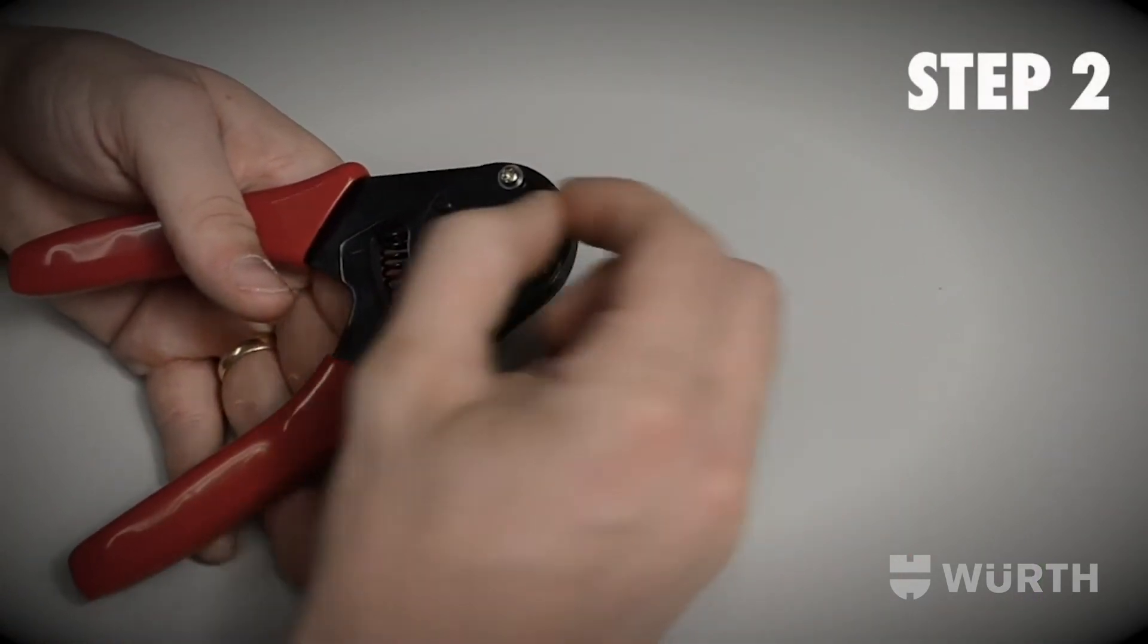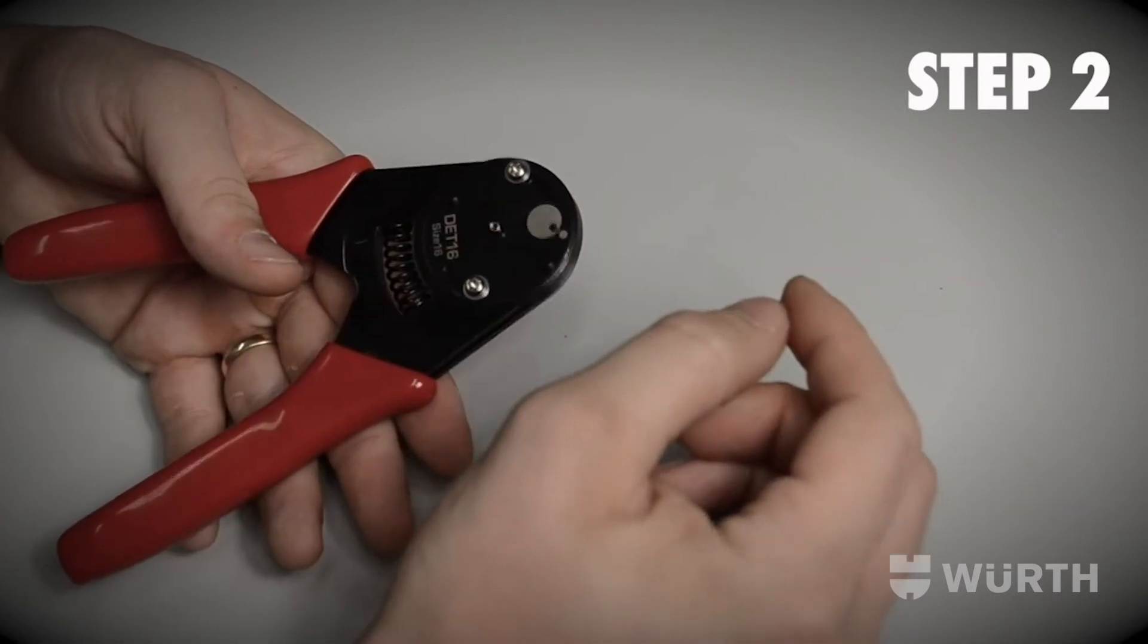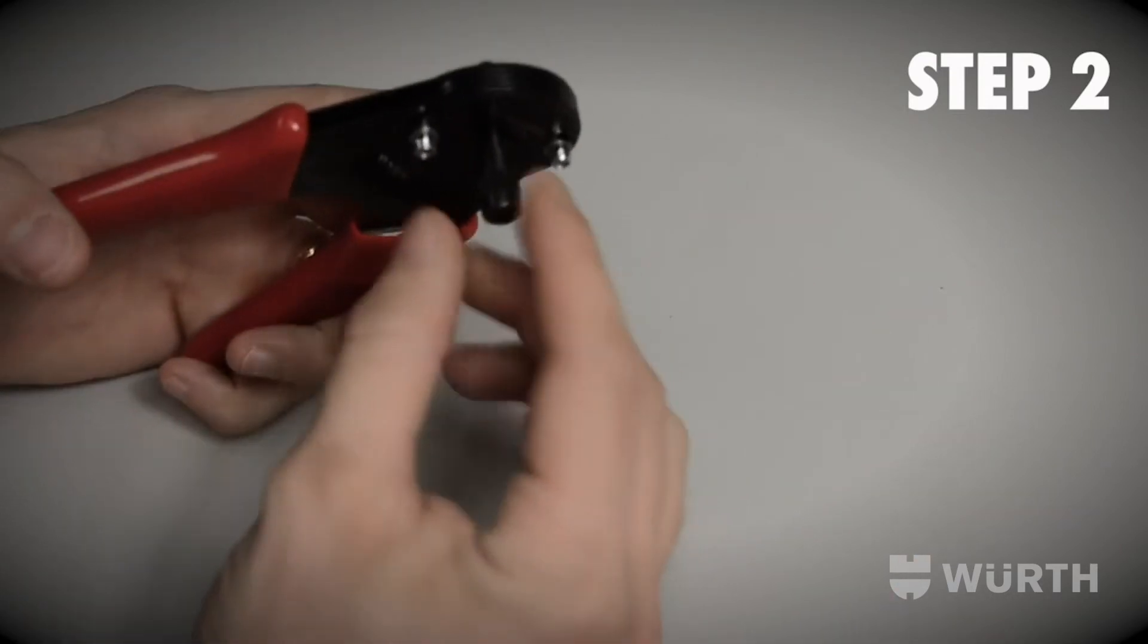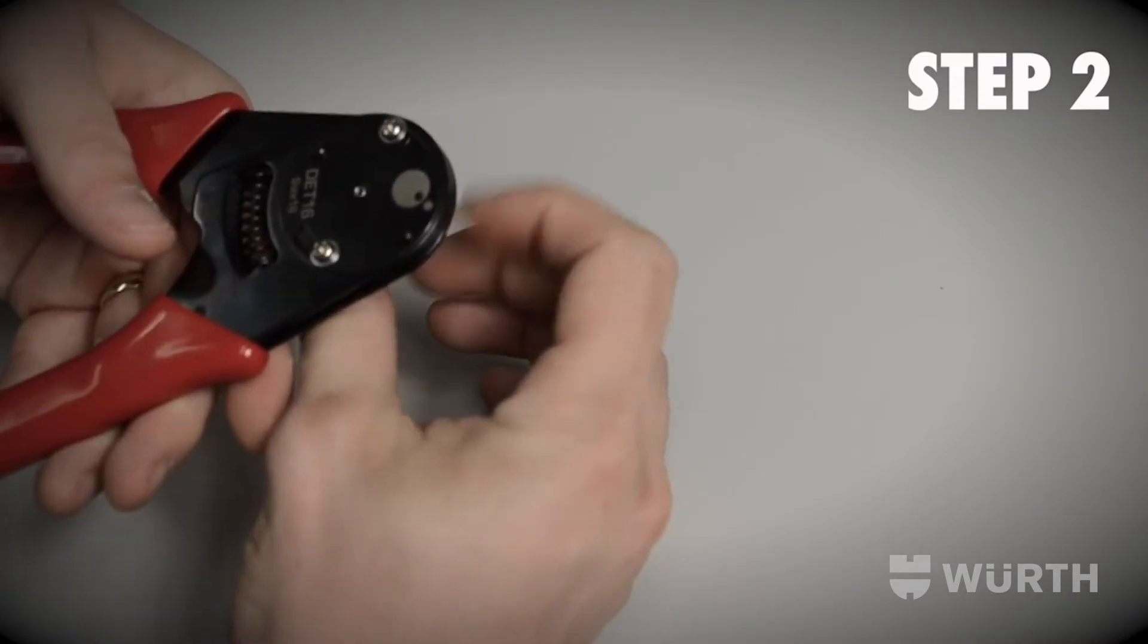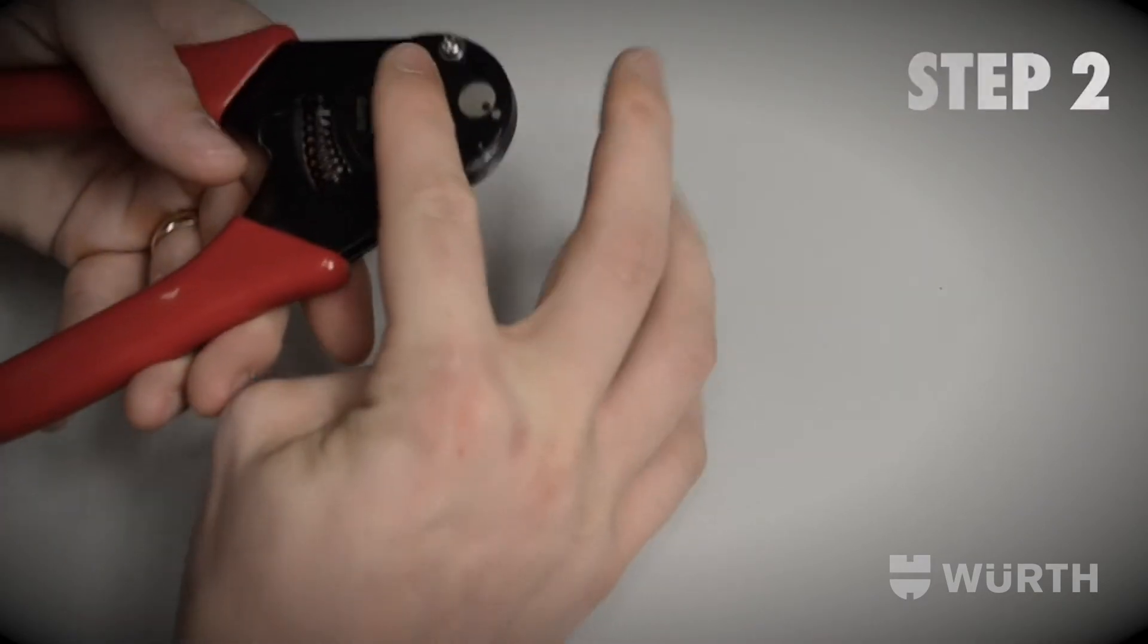Using your Wurth Deutsch crimper tool, insert the terminal into the hole in the middle of the tool. Using the screw at the back, adjust the height of the terminal so that it sits flush with the front of the tool.